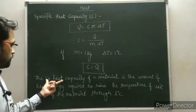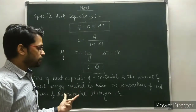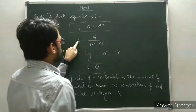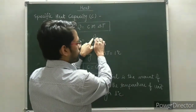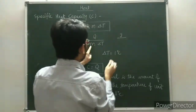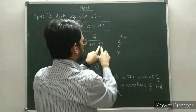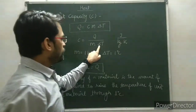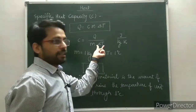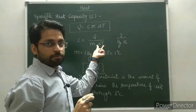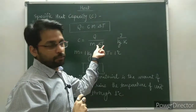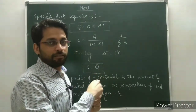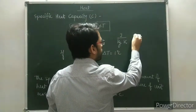The unit of specific heat capacity can be written from the expression C = Q/(m·ΔT). The unit of heat is Joule, the unit of mass is kg in the SI system, and the unit of temperature is Kelvin. One thing to note is that this is a difference in temperature, and the difference in temperature is the same on the Kelvin and Celsius scales. So we can write the unit as J/(kg·K) or J/(kg·°C) — both are correct.